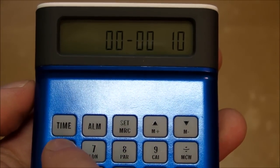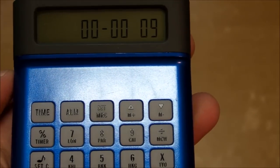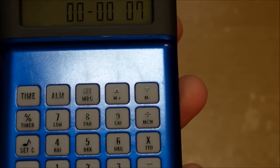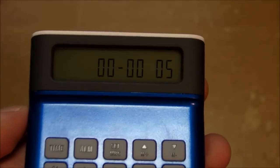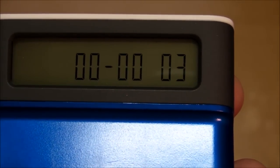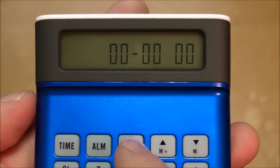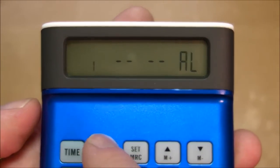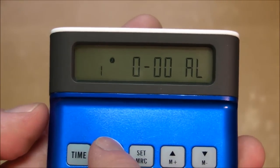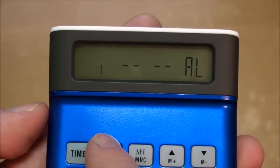And then to get the timer started, you just push the timer button. And yep, it's counting down. And just push any button to make it quiet. Alarm, of course, you can turn the alarm off or on. And right now it's off.